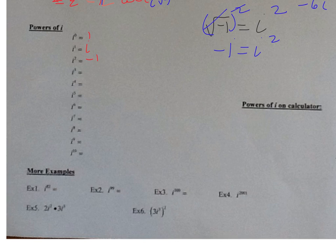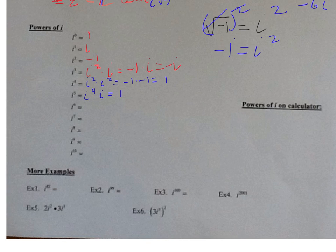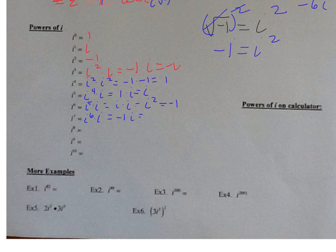Now i to the third: i cubed is i squared times i. i squared is negative 1 times i, which is negative i. Now i to the fourth is i squared times i squared, which is negative 1 times negative 1, which equals 1. i to the fifth is i to the fourth times i — i to the fourth is 1 times i — which is i. i to the sixth is i to the fifth times i, which is i times i, which is i squared, and i squared is negative 1. i to the seventh is i to the sixth times i — i to the sixth is negative 1 times i — which is negative i.